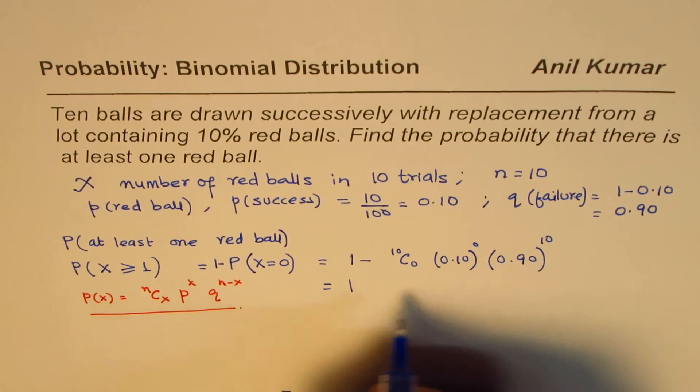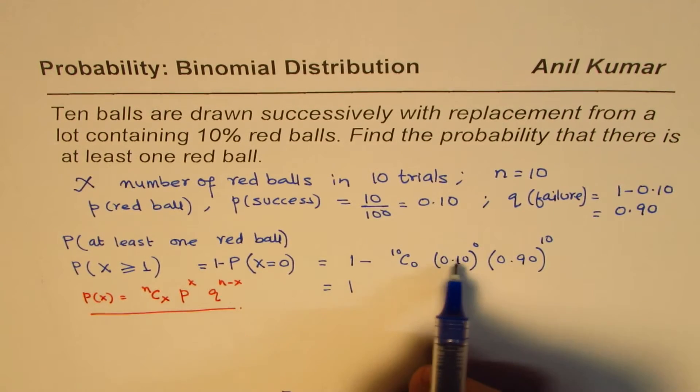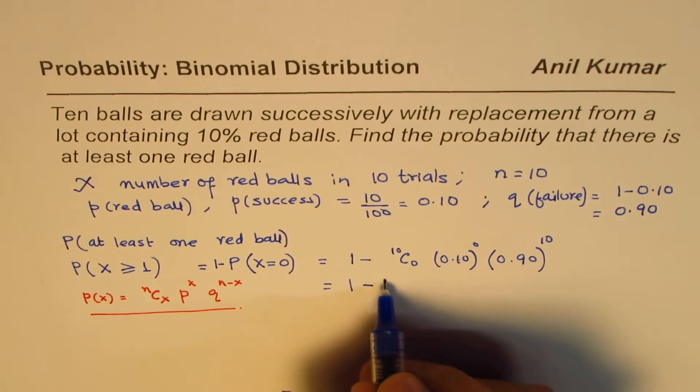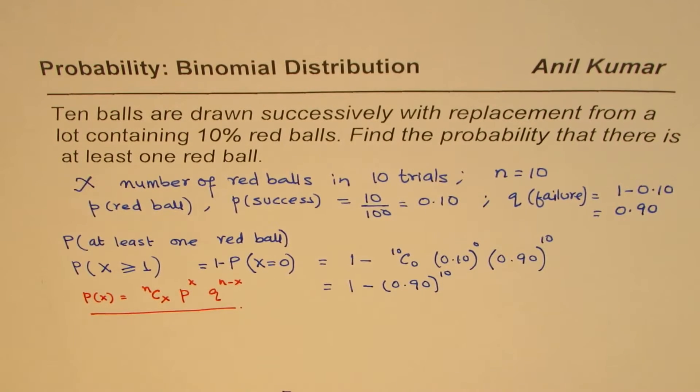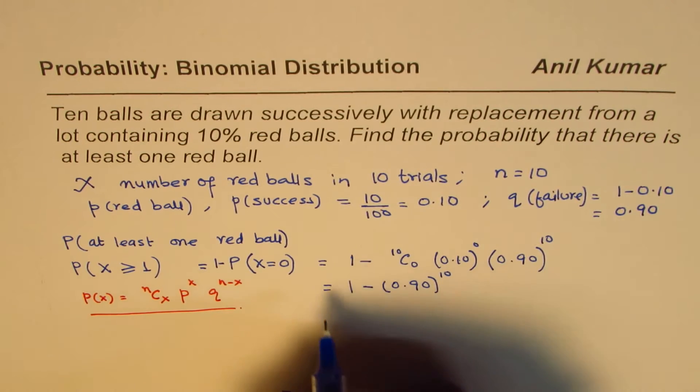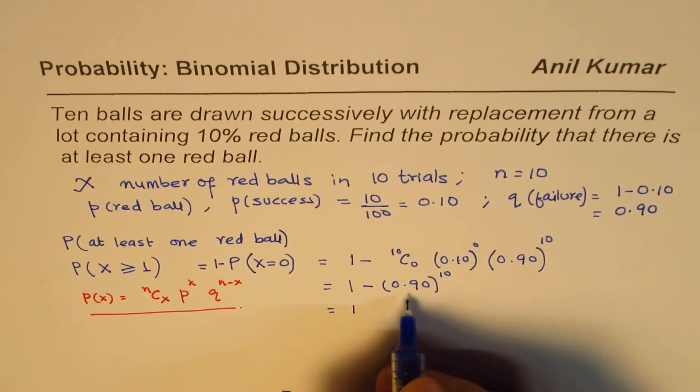So we can use the calculator and calculate this answer. This is 1, this is 1. So 1 minus 0.90 to the power of 10, so that becomes the answer for us. You could also write this in fractions, which is 9 over 10 to the power of 10. You could do that also.